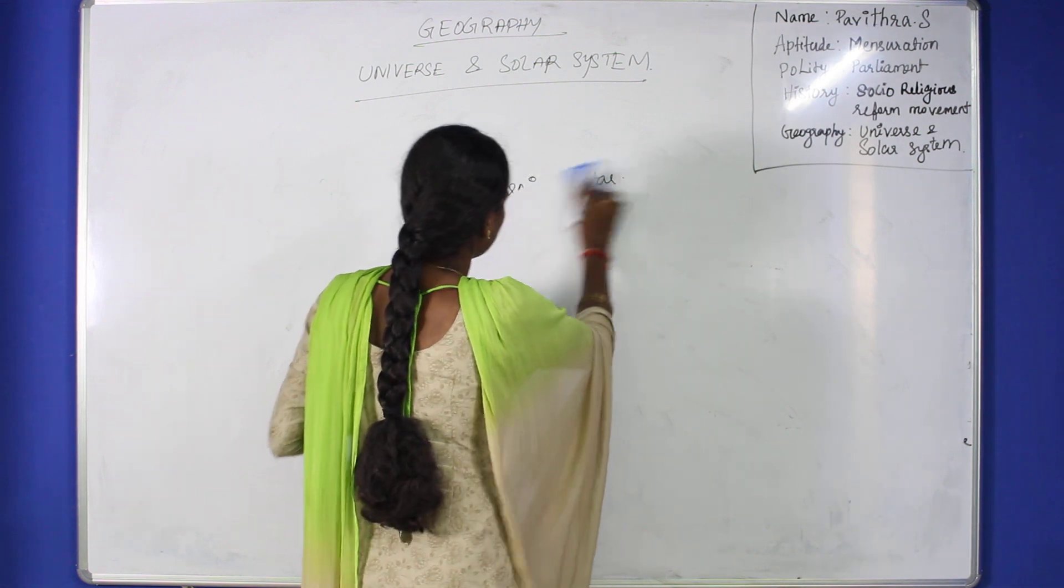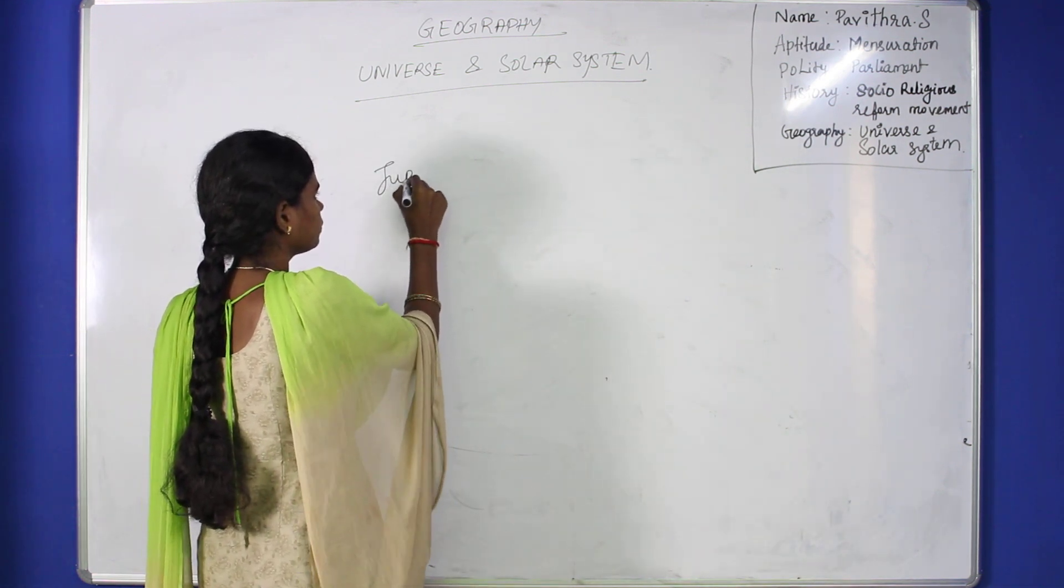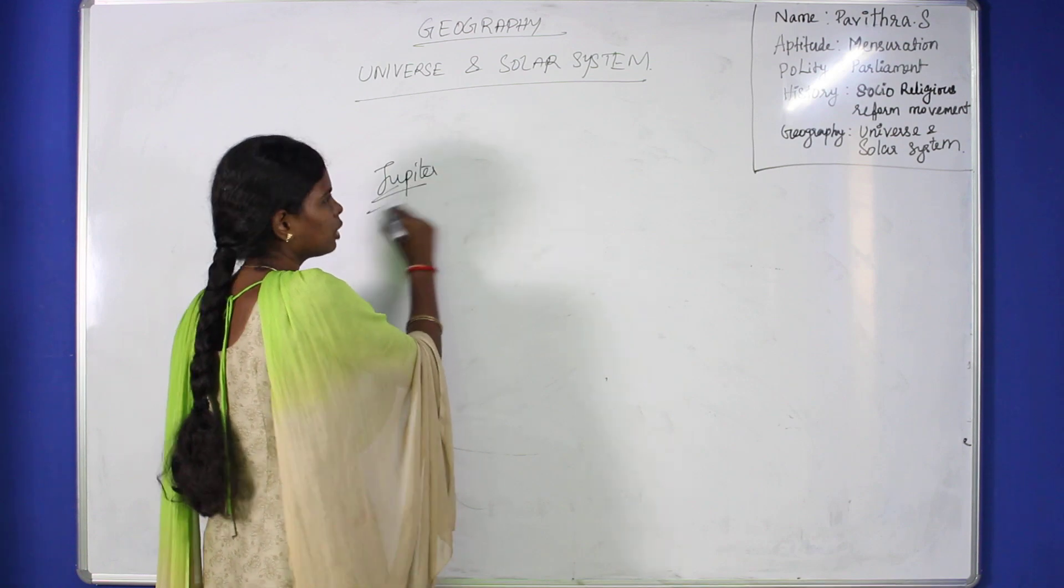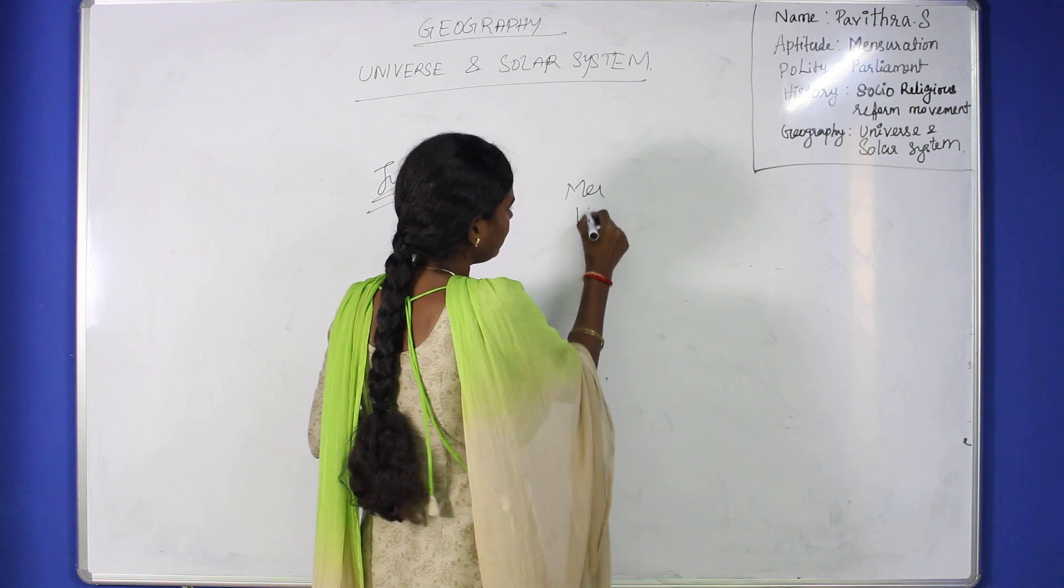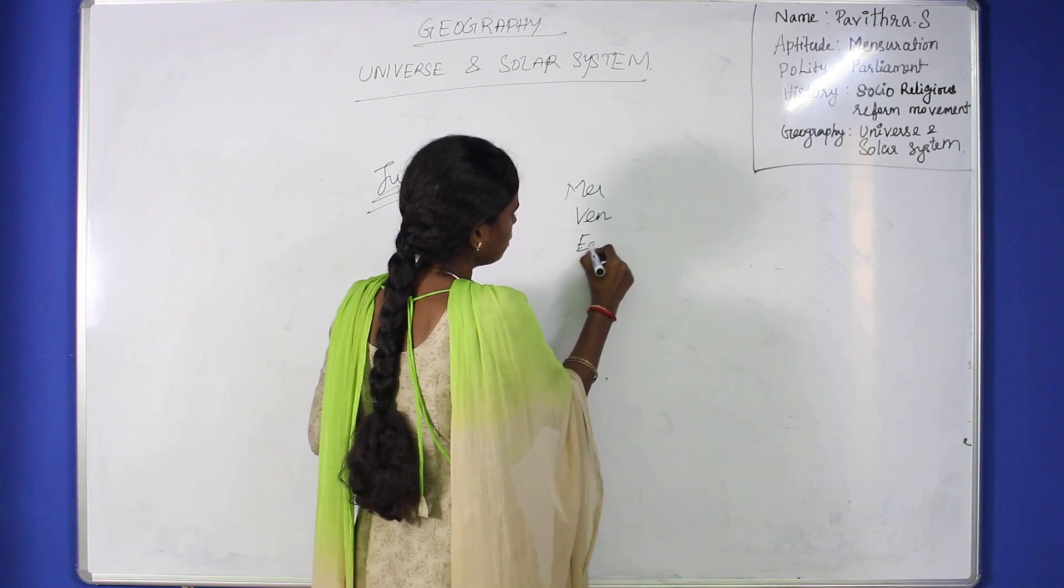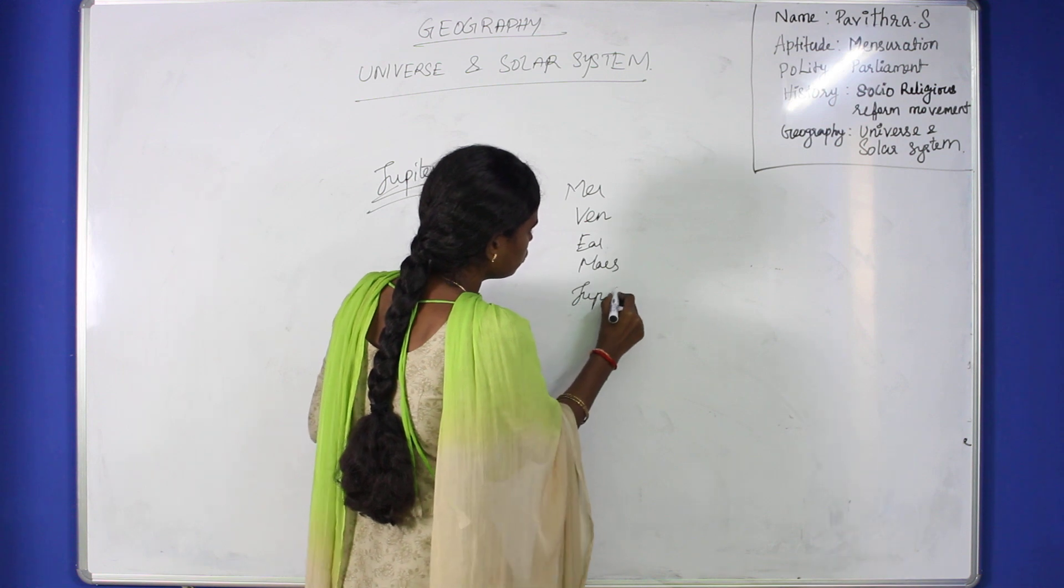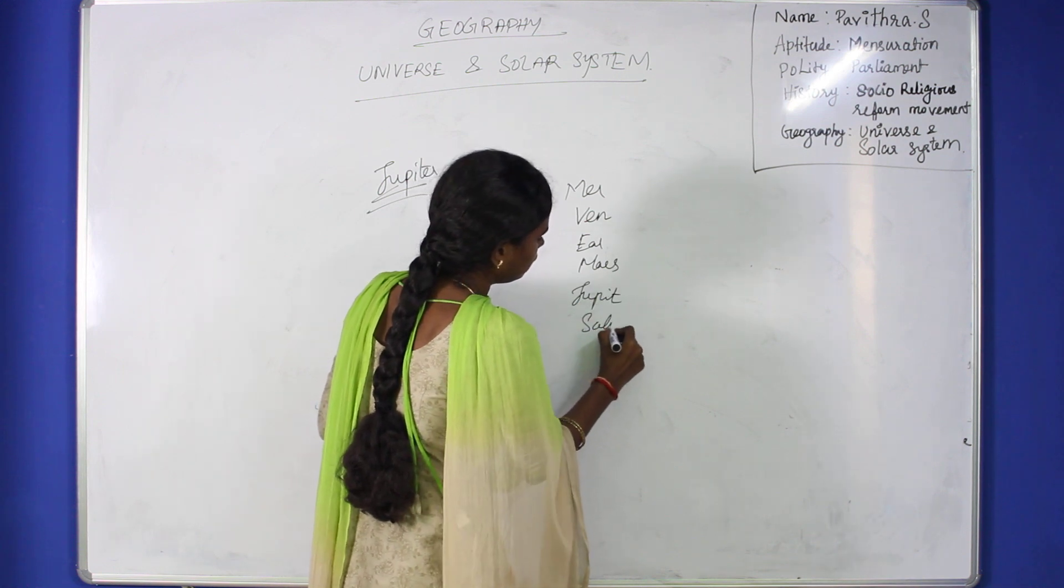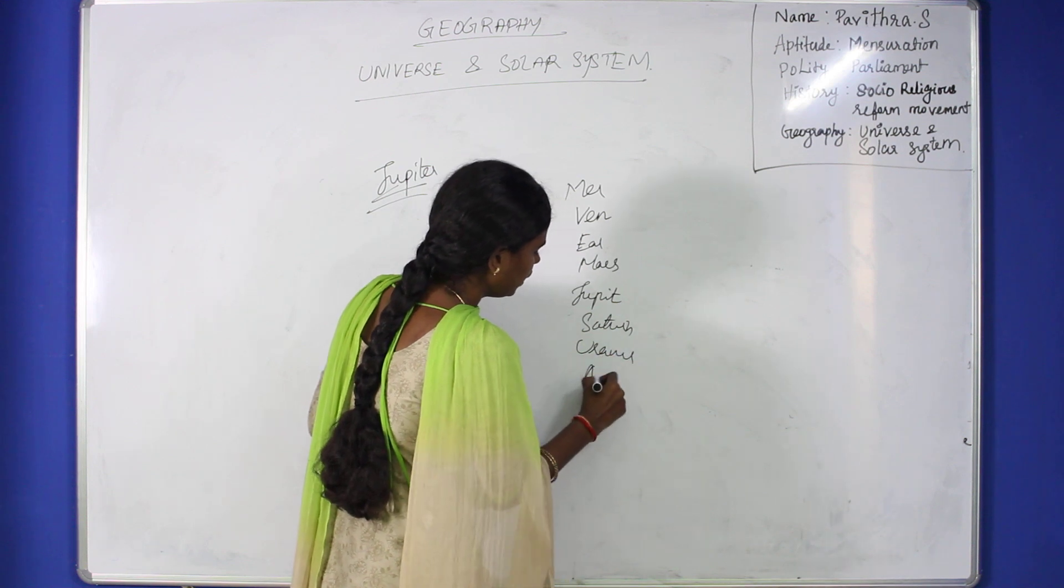Next, the eight planets in the solar system are: Mercury, Venus, Earth, Mars, Jupiter, Saturn, Uranus, and Neptune.